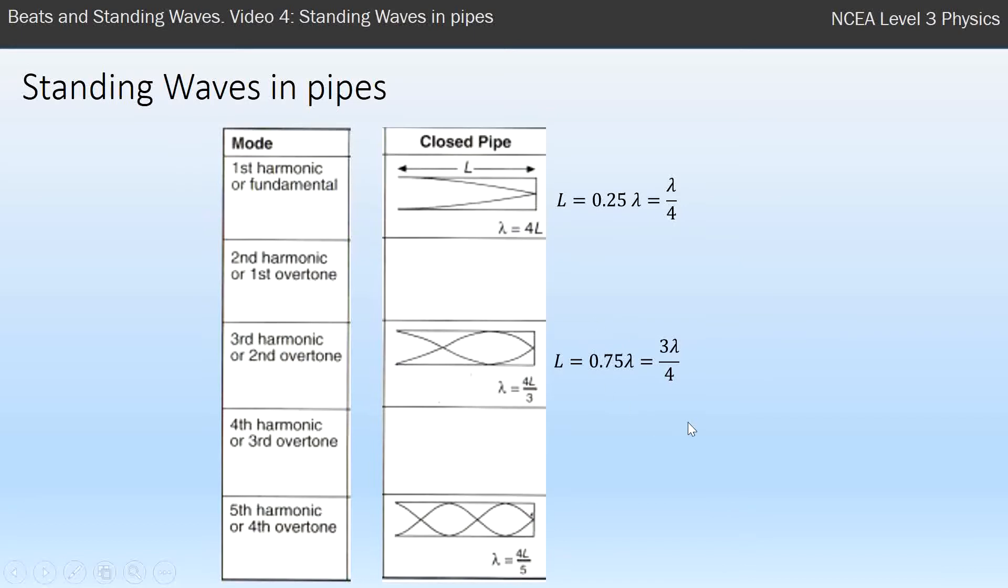This is algebraically equivalent to the other way it's written, but I like the way that I've got it up here, and the last one here there's one full wave and a quarter, so there's 1.25 waves.